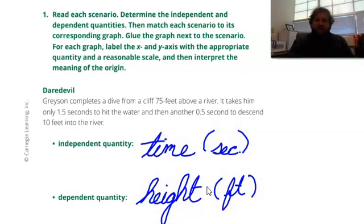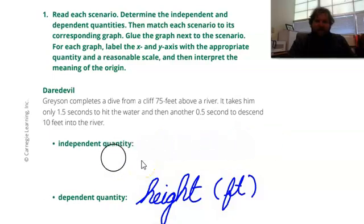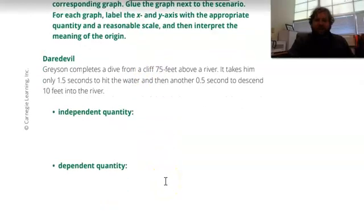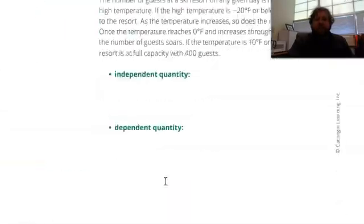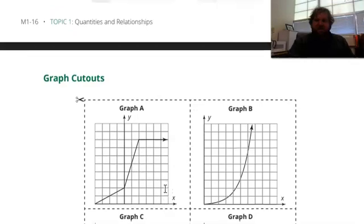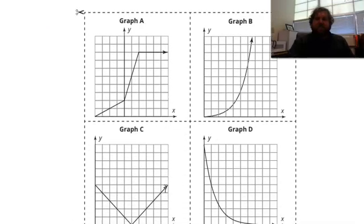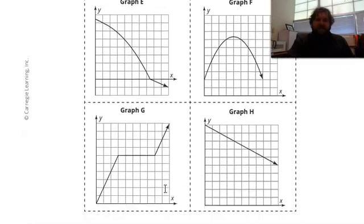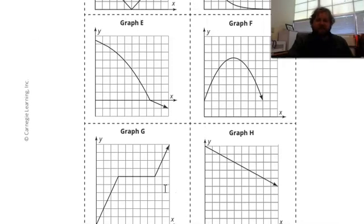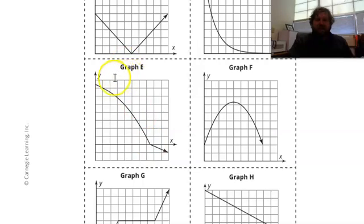Now we've identified our independent quantity and our dependent quantity. The next thing is to match the scenario to its corresponding graph. I'm going to erase this so that it doesn't follow us. If you look at the back of the lesson, and what I have here is exactly what you'll see in your book, all the way at the end after talk to talk, you'll see this thing called graph cutouts. One of these graphs matches that description from our daredevil scenario, and in this case, it's graph E.